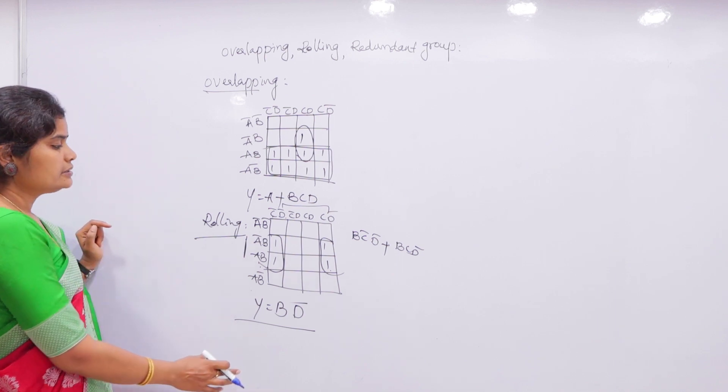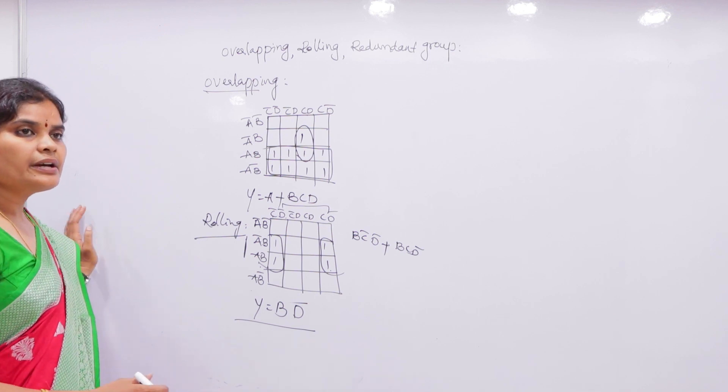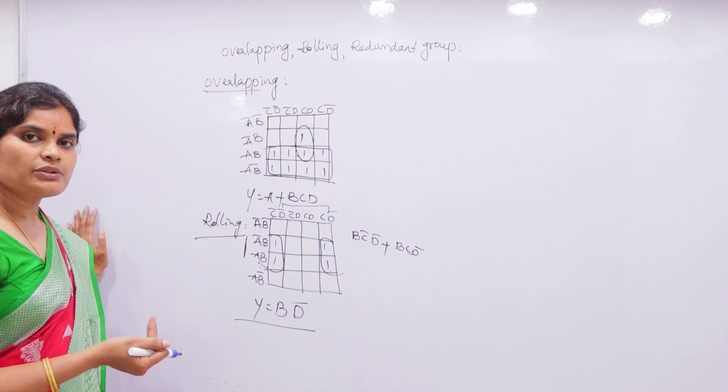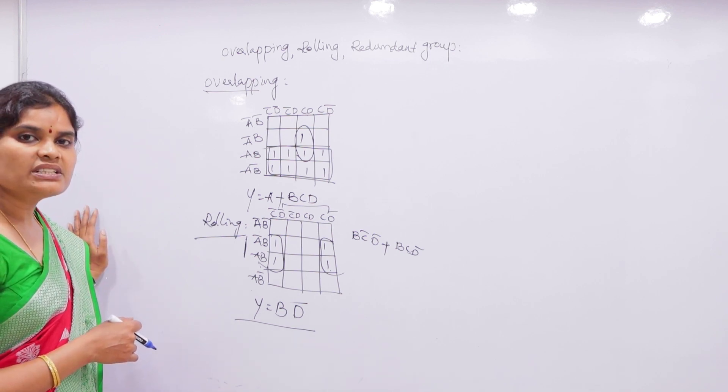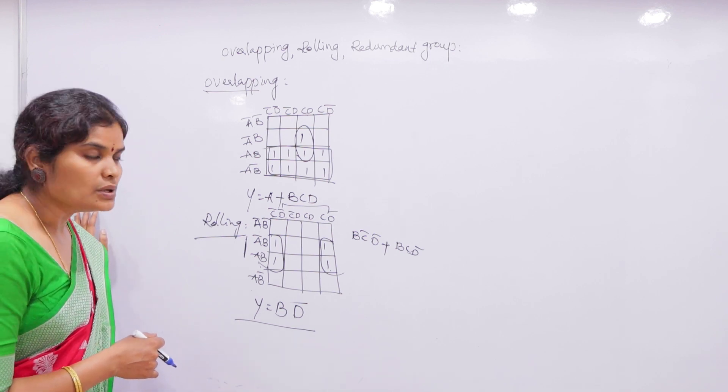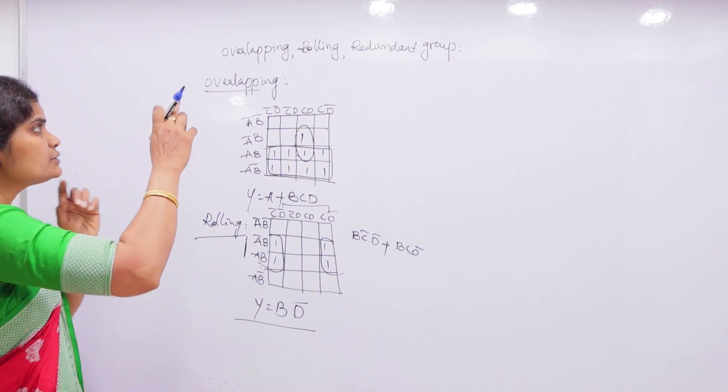If we had gone with pairs instead, the first pair answer would be B C-bar D-bar, plus the second pair answer B C D-bar — which has more variables. So instead of doing all that, we directly get the quad answer Y equals B D-bar. In this way we can reduce the number of variables by using rolling technique.